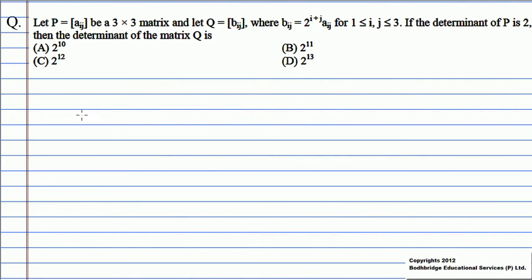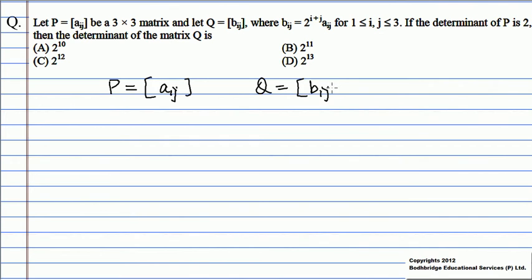Let P = [a_ij] be a 3×3 matrix and let Q = [b_ij] where b_ij = 2^(i+j) * a_ij for 1 ≤ i, j ≤ 3. If the determinant of P is 2, then the determinant of matrix Q is? Given that P is a 3×3 matrix with terms a_ij and Q is a 3×3 matrix with terms b_ij = 2^(i+j) * a_ij. Also, determinant of P is equal to 2.